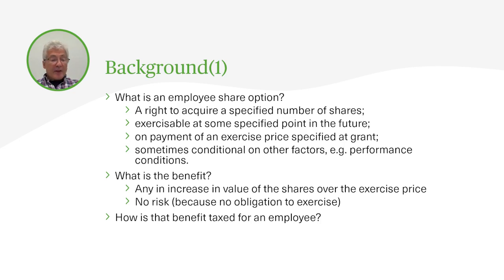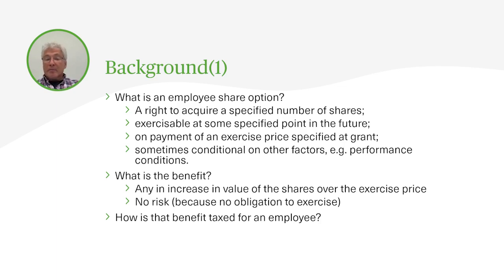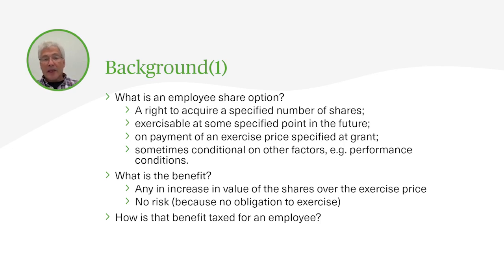That benefit is available at effectively no risk to the employee, because he is not obliged to exercise the option and therefore is not obliged to pay the price for the shares. This assumes that, as is normal, nothing is actually paid for the grant of the option by the employee — so if you're not obliged to pay the price, you're not at risk. How then does that benefit get taxed for the employee? That is the subject of this talk.